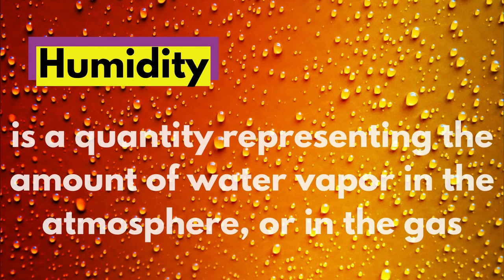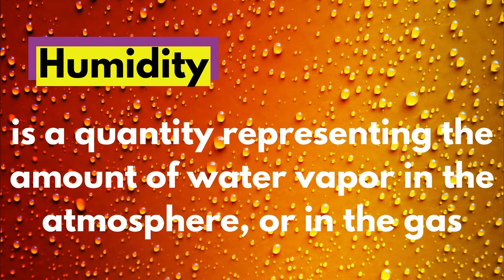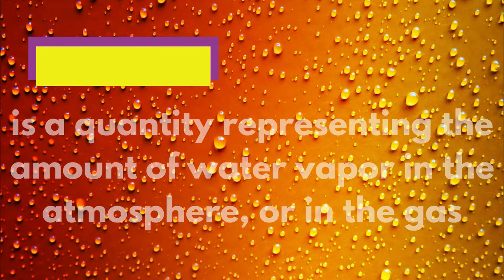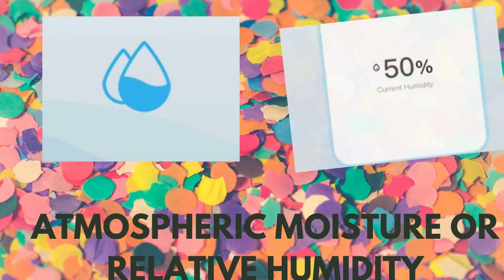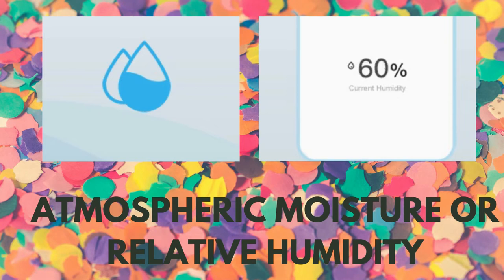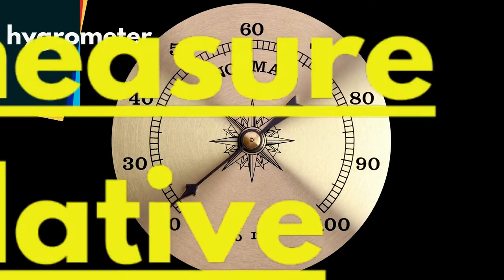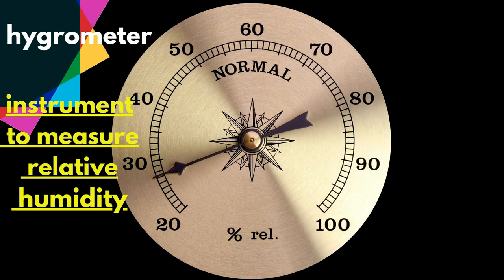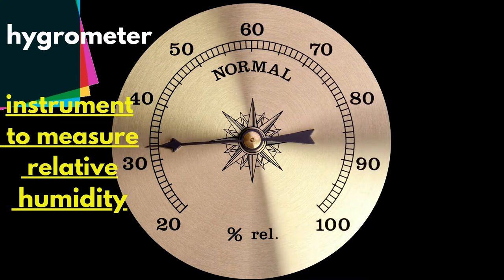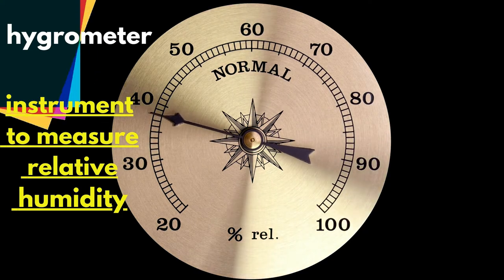Humidity is a quantity representing the amount of water vapor in the atmosphere or in a gas. It is also called atmospheric moisture or relative humidity. Moisture in the form of water vapor is always present in the atmosphere. A hygrometer is an instrument used to measure relative humidity.